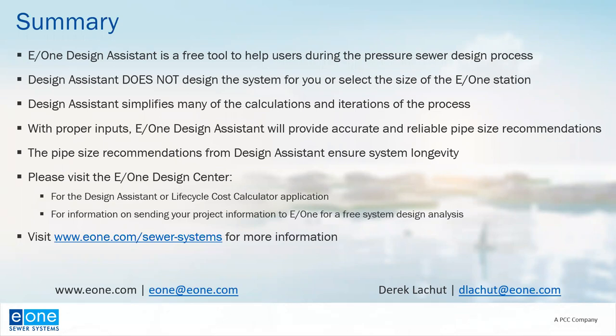How would you account for sizing where a project is being done in phases over a long period of time? Generally when talking about phasing, depending on how long it takes, you can either design the system for full build-out and anticipate having to do some extra maintenance flushing of the lines before full build-out. Or some alternatives that we've seen have been running parallel force mains to each section to make sure flows are high enough to avoid high retention times throughout the whole build-out process.